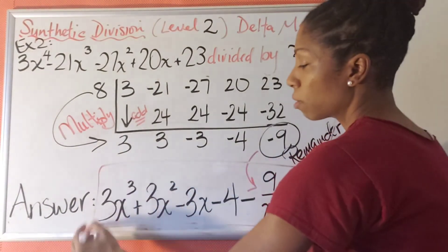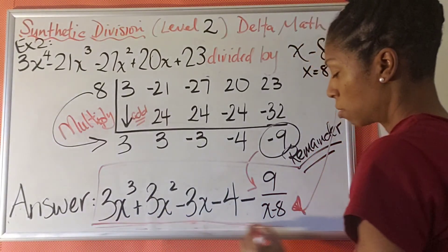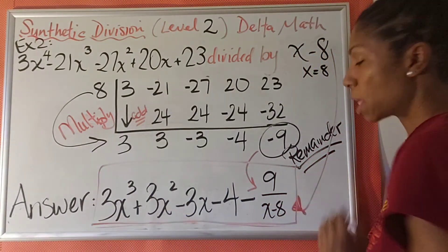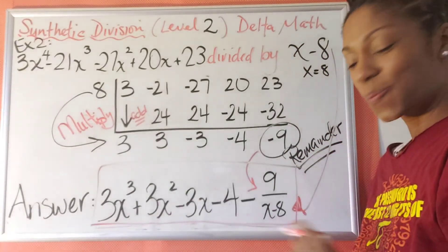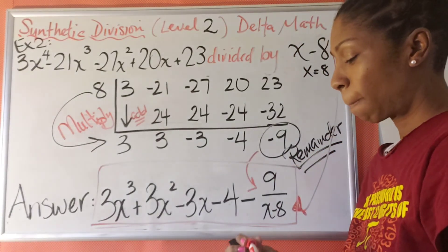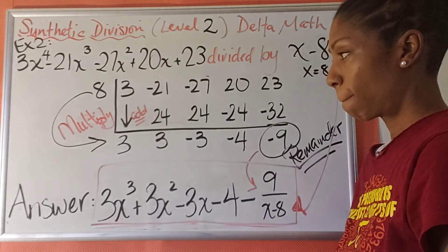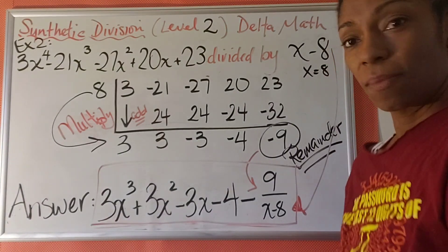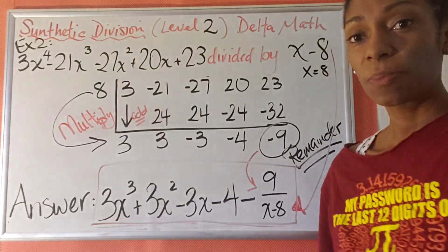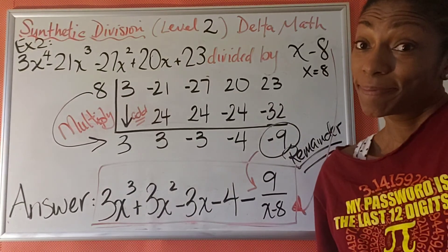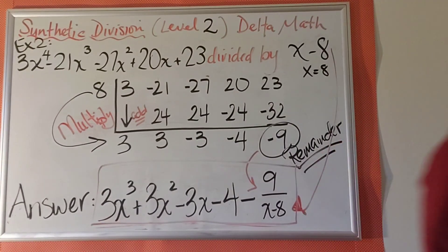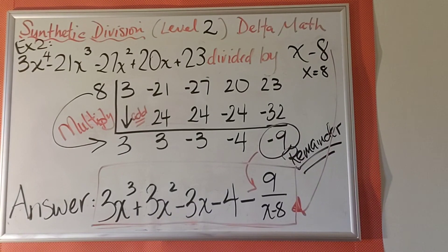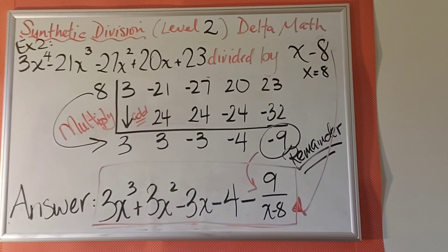So this whole thing — 3x cubed plus 3x squared minus 3x minus 4 minus 9 over x minus 8 — that's our answer. I hope this helped.